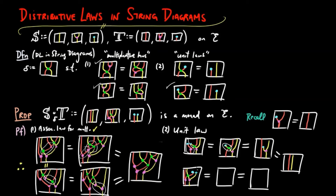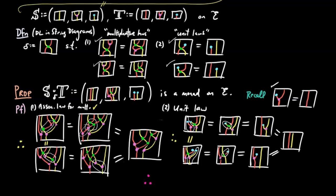Similarly, we use the unit law for the monad S, then the top unit law for the distributive law, and the unit law for the monad T to obtain the equality on the bottom. Therefore, the unit law holds. Therefore, the composition ST via the distributive law delta is a monad on E, which completes the proof.